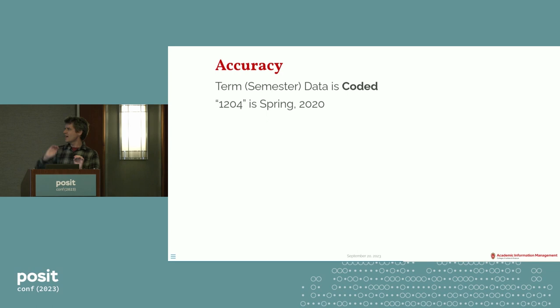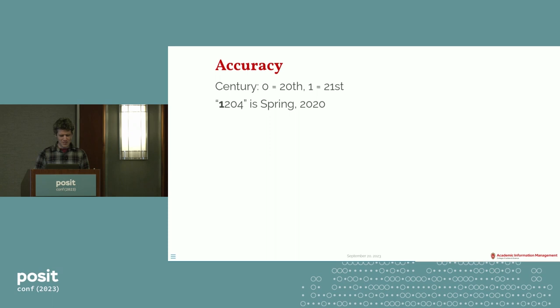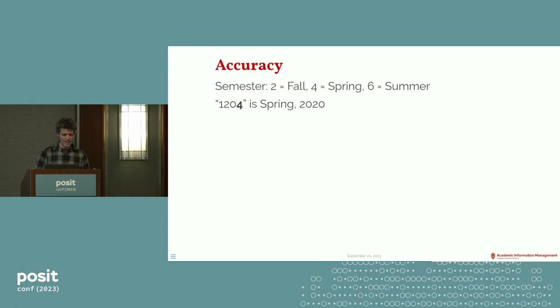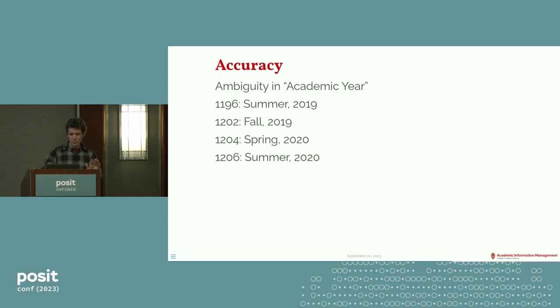Why is this happening? The term or semester data is coded in our system using a four-digit code. For instance, 1204 is spring 2020. The first digit represents the century: 0 is the 20th century, 1 is the 21st century. The second two digits are the last two digits of the year — but this is not the academic year or the calendar year, which becomes an issue. The last digit represents the semester: fall, spring, and summer are coded 2, 4, and 6 — apparently leaving room for a potential winter term.